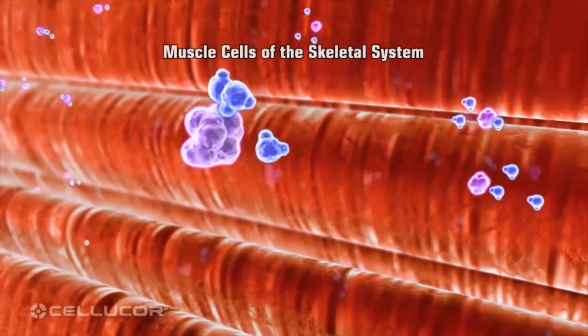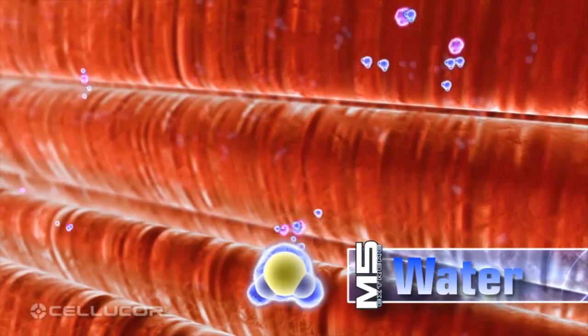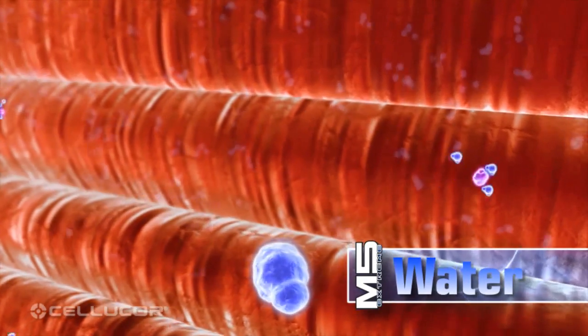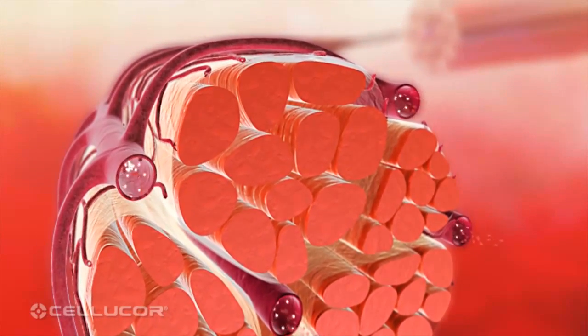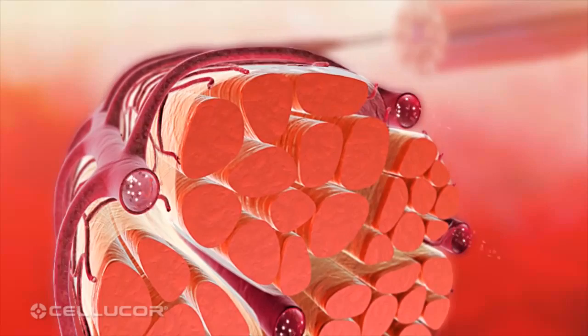Creatine compounds are highly attractive to water and increase cell volume and hydration levels when absorbed into the muscles. M5 Extreme also contains ingredients that stimulate the body to produce nitric oxide.